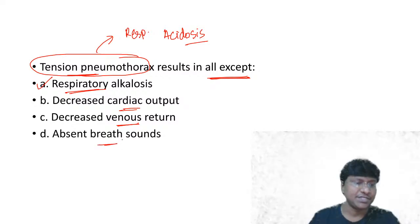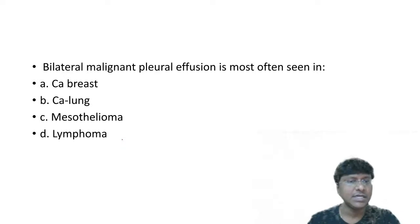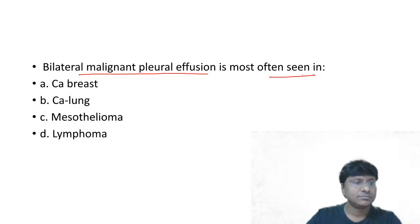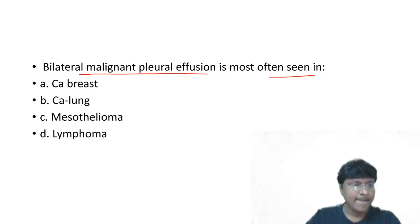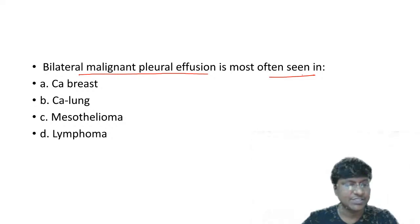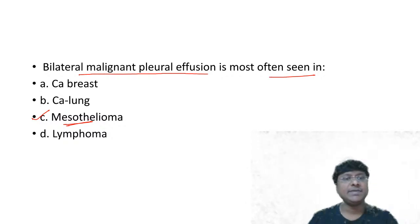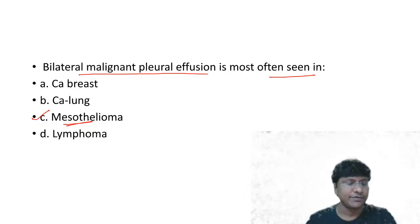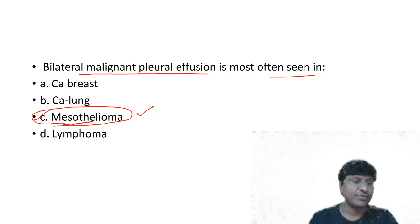Bilateral malignant pleural effusion is most often seen in mesothelioma. In other conditions like carcinoma breast, carcinoma lung, and lymphoma, you can have unilateral malignant pleural effusion - not bilateral. Bilateral malignant pleural effusion is specifically seen in mesothelioma.